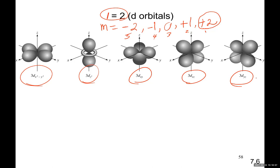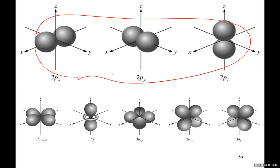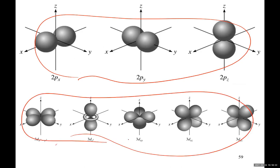P orbitals always come as a triplet, and d orbitals always come as a quintuplet. These are all geometrical shapes around the nucleus, obtained by solving wave equations for electrons. This tells you that one, or a maximum of two electrons, can be inside these geometrical shapes — representing the possible shapes of the electron clouds around the nucleus.